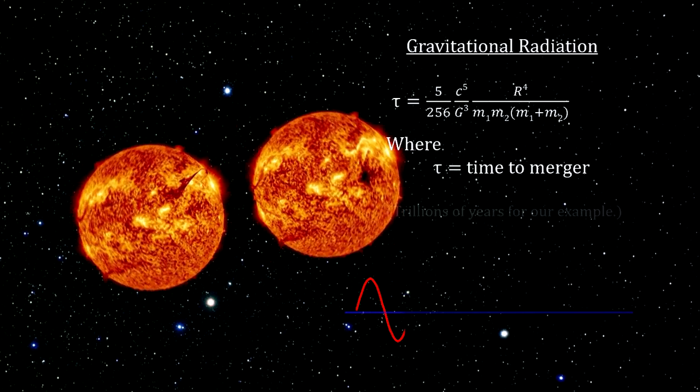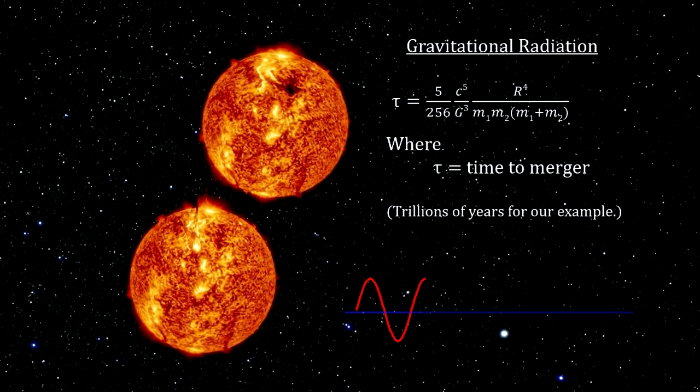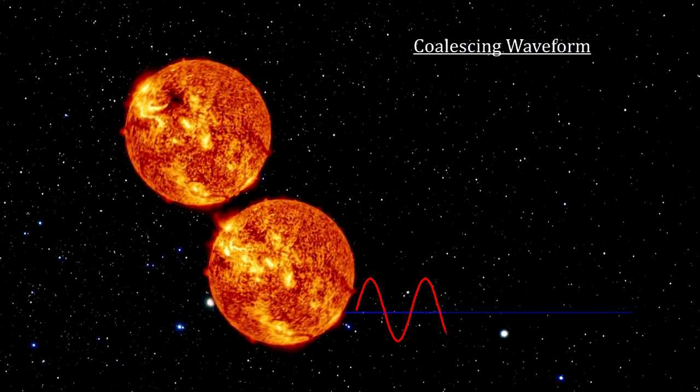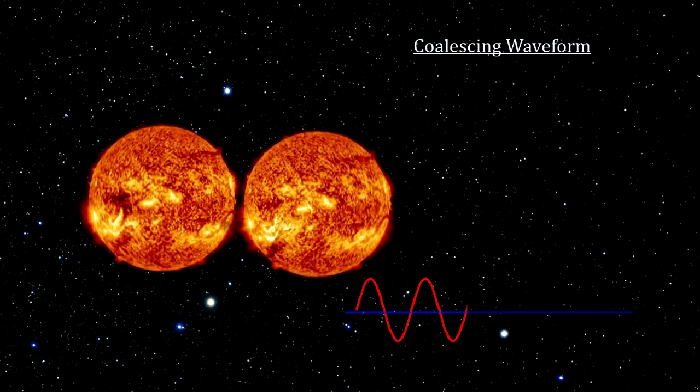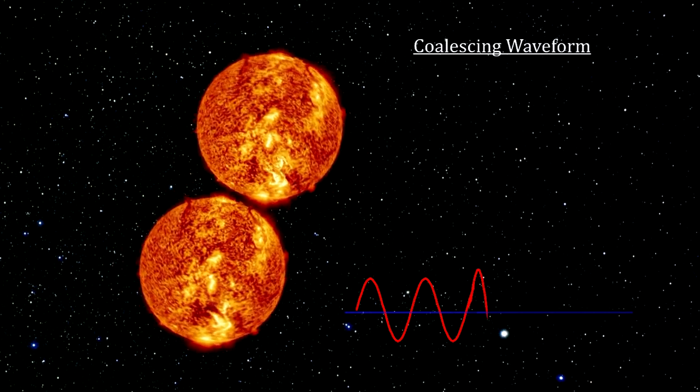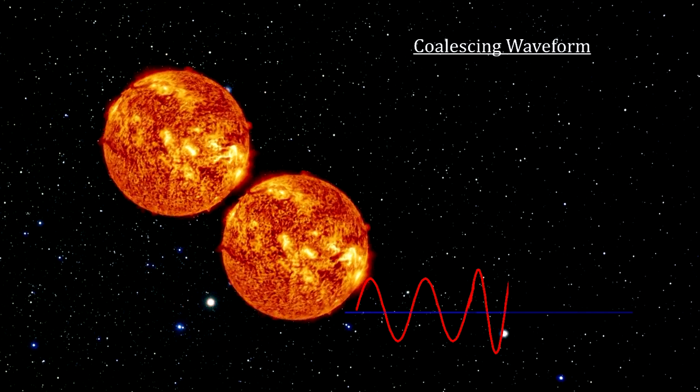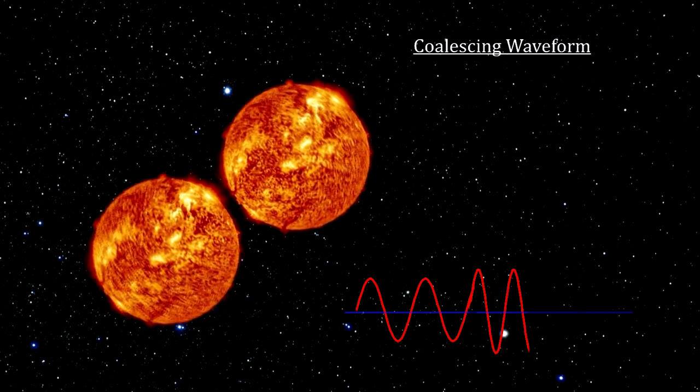With a decaying orbit, the objects will eventually collide and coalesce. The resulting waveform, called a coalescing waveform, serves as a signature for this kind of gravitational wave source.